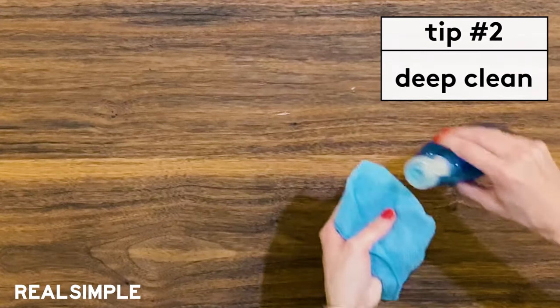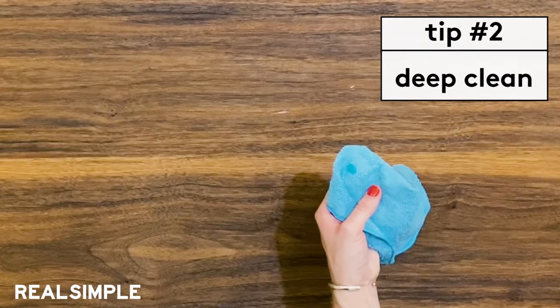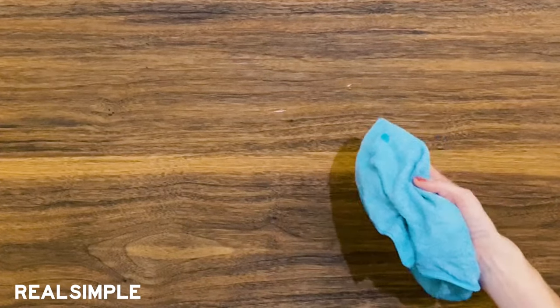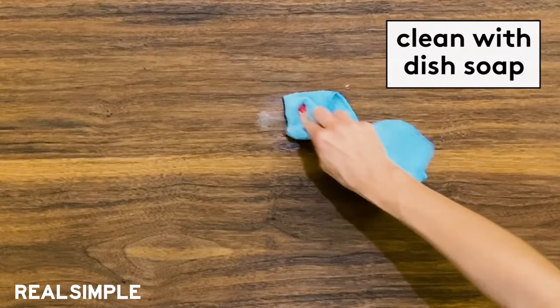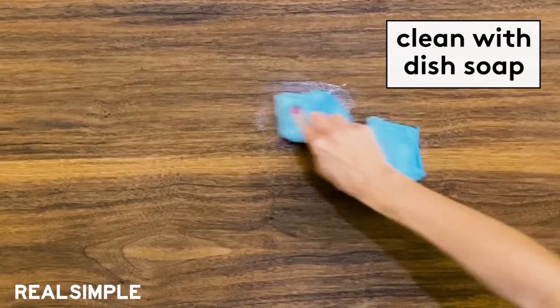Now, if you found any sticky spots when you were cleaning the furniture, you just want to take another damp microfiber cloth and a dab of grease cutting dish soap and use it to work out any of the grime.